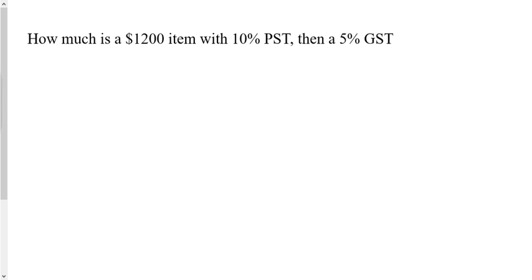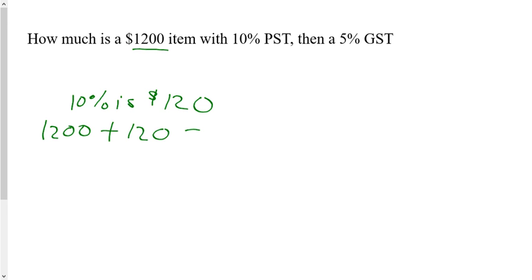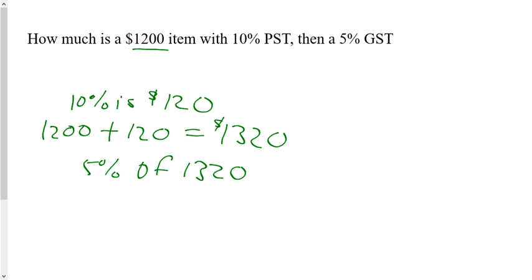Now we get into numeric responses. How much is a $1,200 item with 10% PST and then 5% GST? Remember, the PST is added on first before you calculate your GST. 10% of $1,200 is $120, so the item costs $1,320 after the 10% PST. Now the 5% GST is not on the $1,200 — it's on the $1,320. 5% of $1,320 is $66. So $1,320 plus $66 means your final price is $1,386.